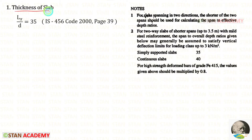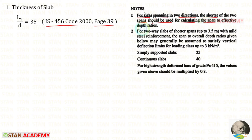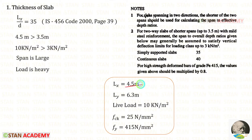First we need to find the thickness of the slab using the span-to-effective-depth ratio. From IS 456:2000, page 39, for slabs spanning in two directions, the shorter span Lx should be used for the ratio. For simply supported slabs the basic ratio is 35, but that applies only for shorter spans with loading up to 3 kN/m². In our case, Lx is 4.5 m (more than 3.5 m) and live load is 10 kN/m², which exceeds 3 kN/m², so we must use a value less than 35.